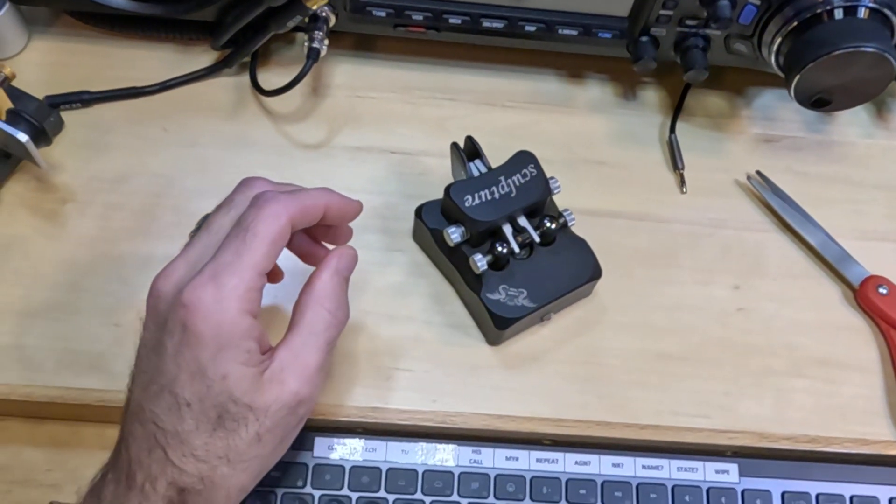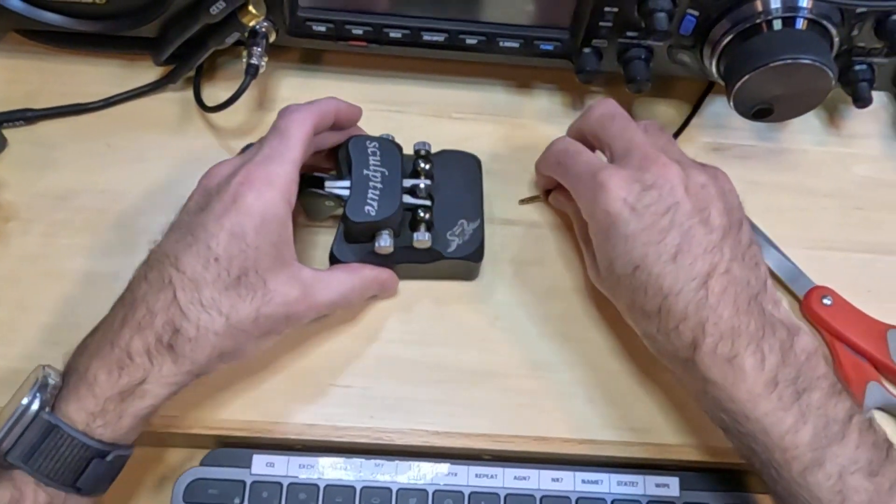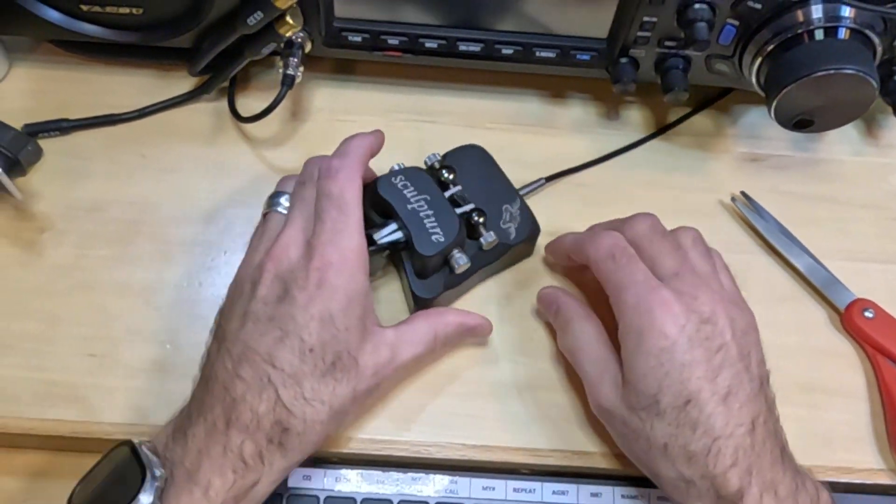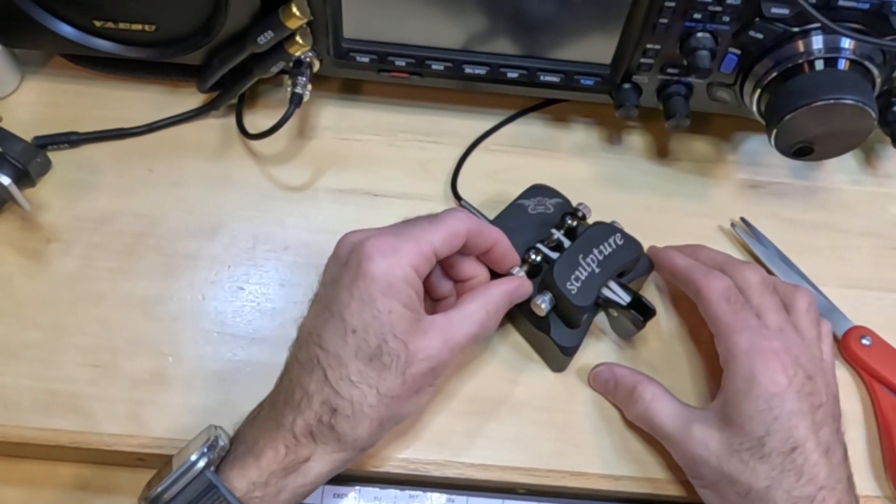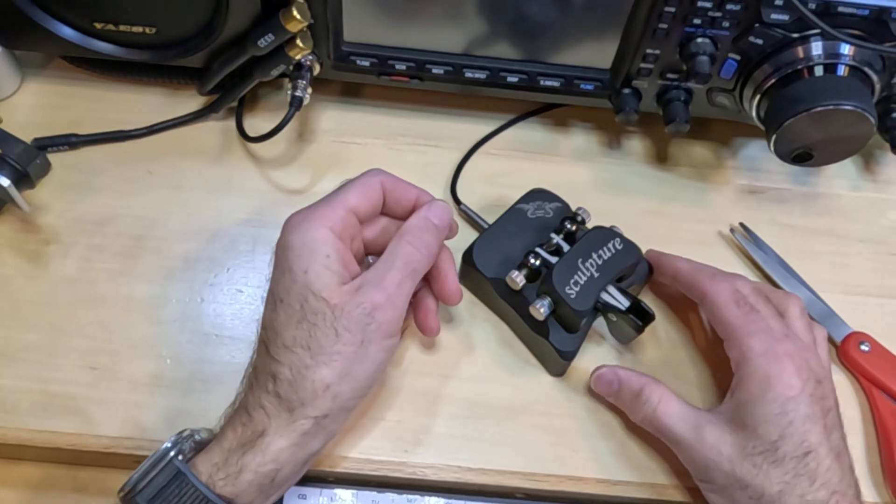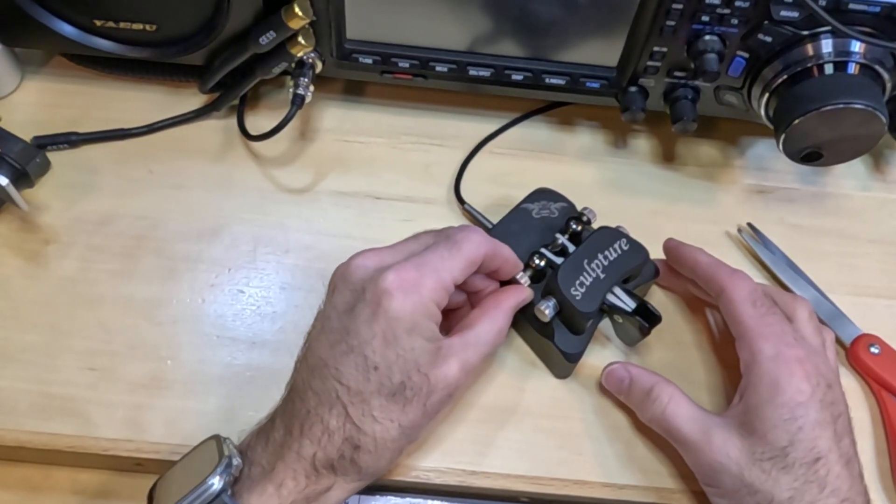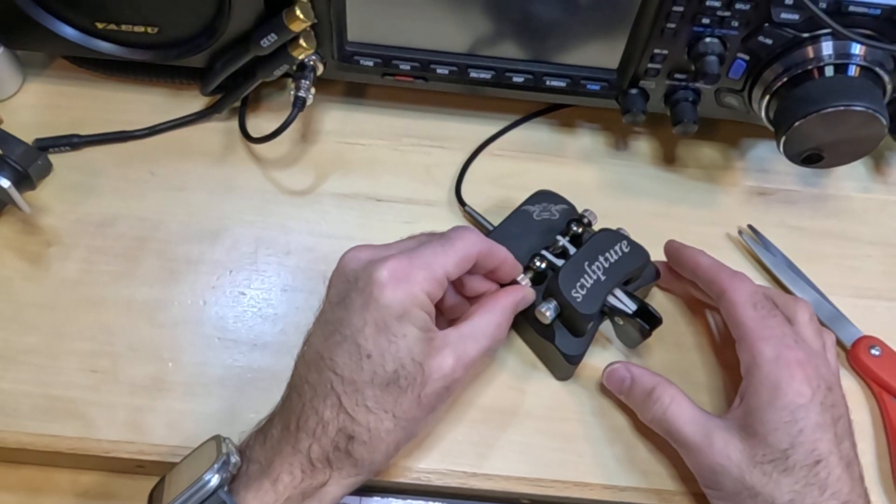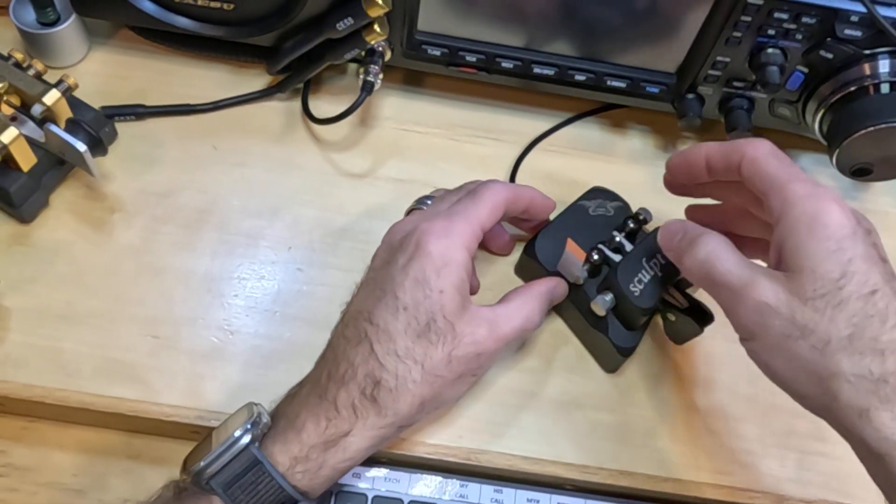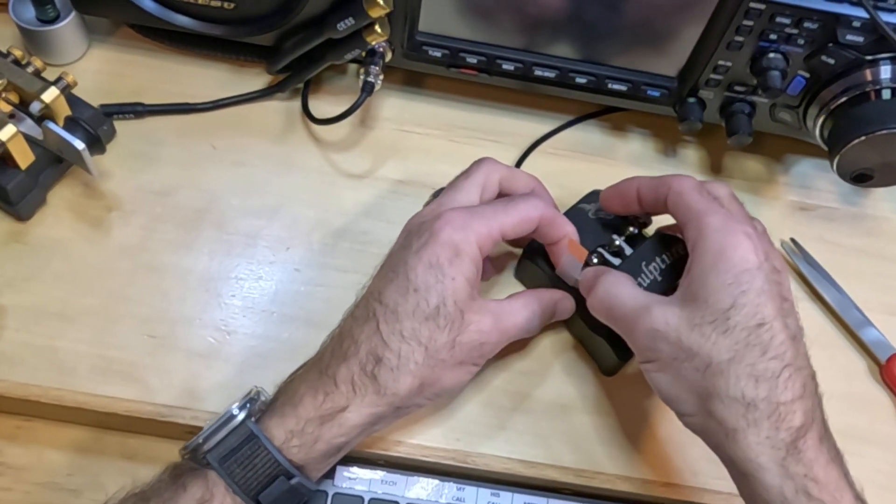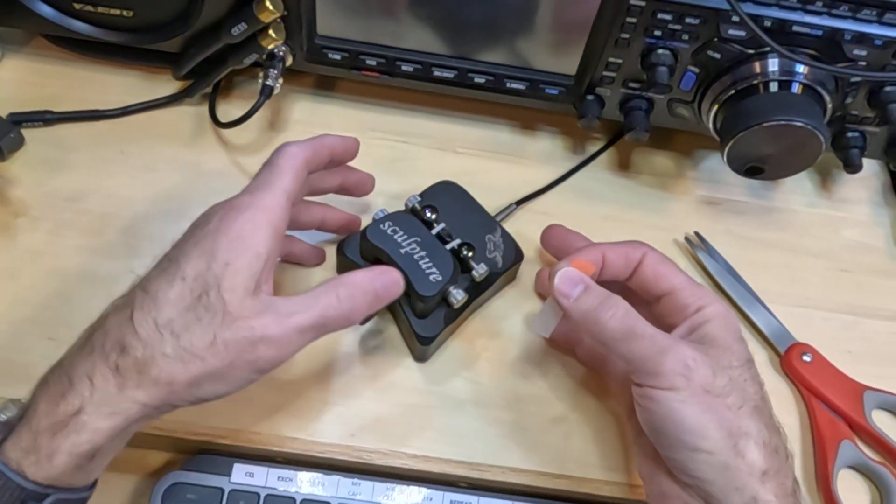Once that's done you want to set your gap. The way I do that is I hook up the keys so I can get a tone on it and take one paddle and bring it in just to the point where it makes contact. So that's right there. And then I just put a marker on it and then I back that off one eighth of a turn. So that's my preference.